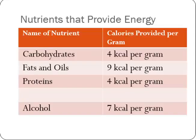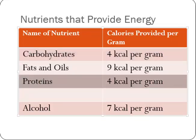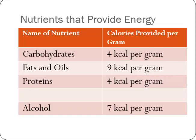Carbohydrates and proteins have about four kilocalories per gram. So for example, a piece of bread that has about 80 calories probably has about 20 grams of carbohydrates. Fats and oils, as you might guess, have more calories — about 9 kilocalories per gram. Alcohol has about 7 kilocalories per gram, more than carbohydrates and proteins but not as many as fats or oils.